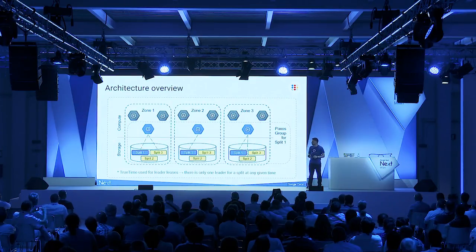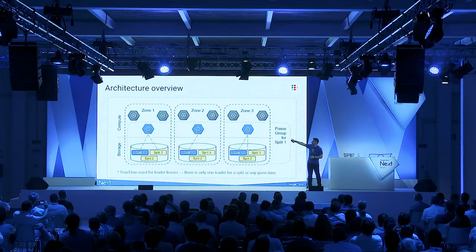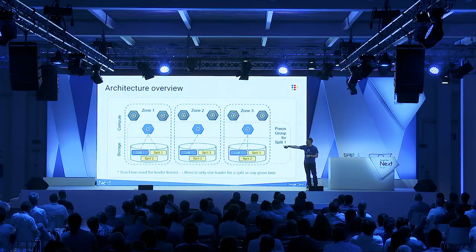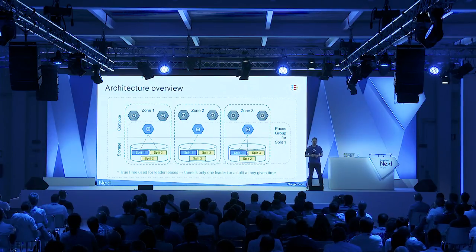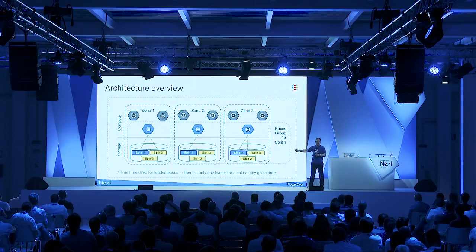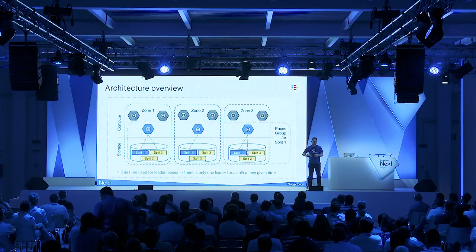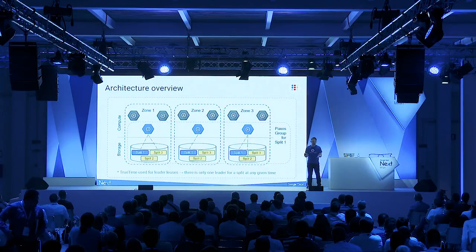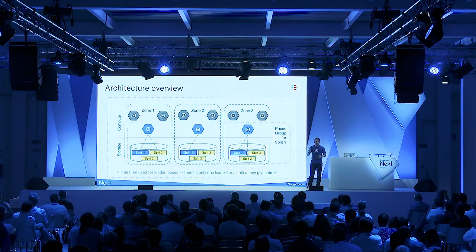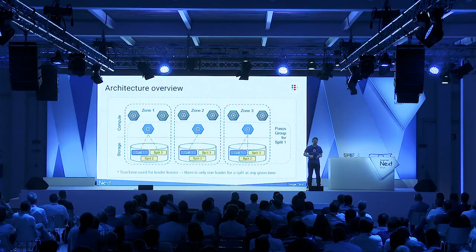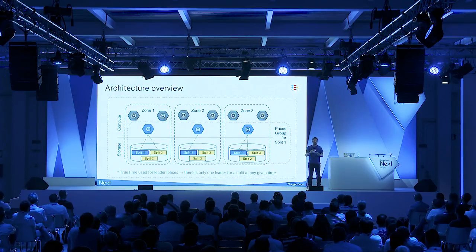We use Paxos to select a leader in each group. Once we have a leader, we ensure that only one compute node is responsible for gating write transactions on that data piece. By that we can make sure we have global consistency, because there's never two leaders for a data piece.